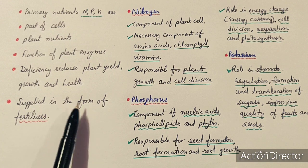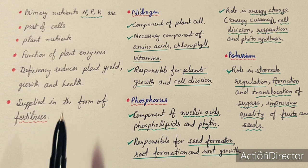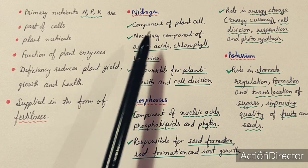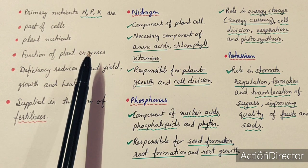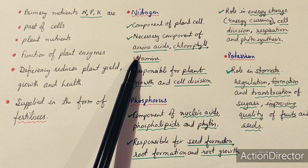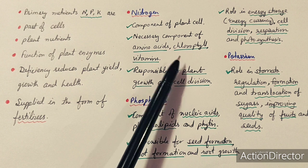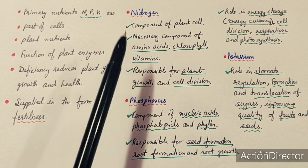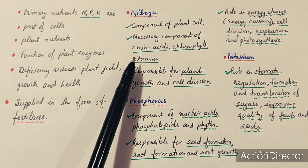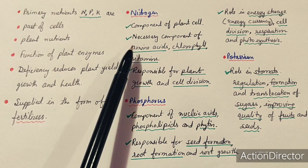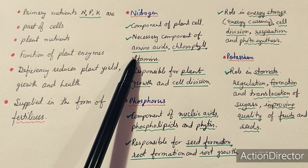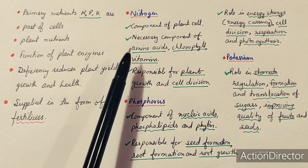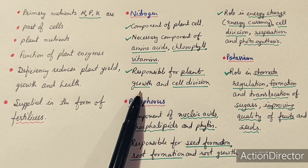We can supply NPK to the soil in the form of fertilizer. Looking at the individual importance: nitrogen is a component of plant cells. It is found in amino acids, from which proteins are made. It is also present in chlorophyll and vitamins. Nitrogen is the major component of cell compounds like amino acids, chlorophylls, and vitamins.